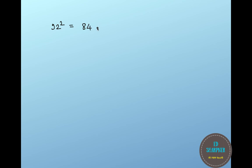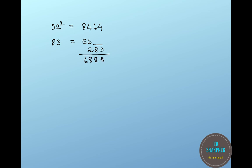Let's quickly do more examples. The square of 92: subtract 8 from 92 to get 84, and the square of 8 is 64, giving 8464. The square of 83: subtract 17 from 83 to get 66, and the square of 17 is 289. Since we have three digits but only two places remaining, write 289 below the units digit of 66 and add — giving 6889. The square of 91: subtract 9 from 91 to get 82, and the square of 9 is 81 — giving 8281.